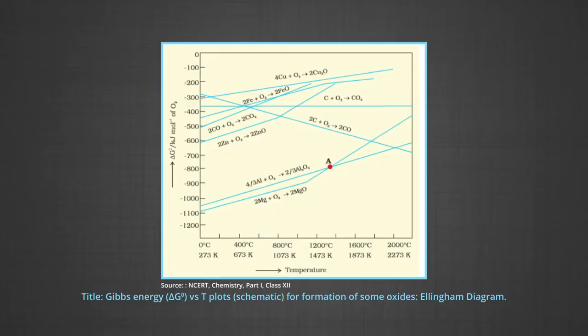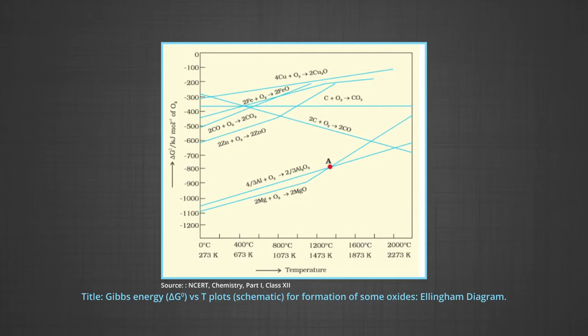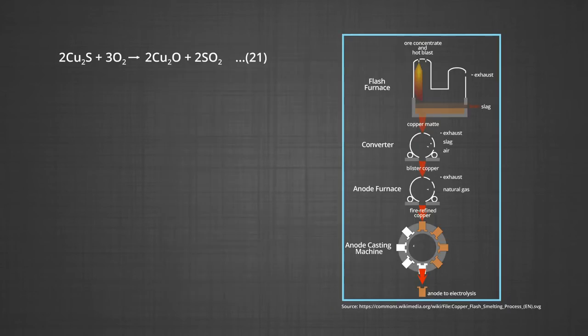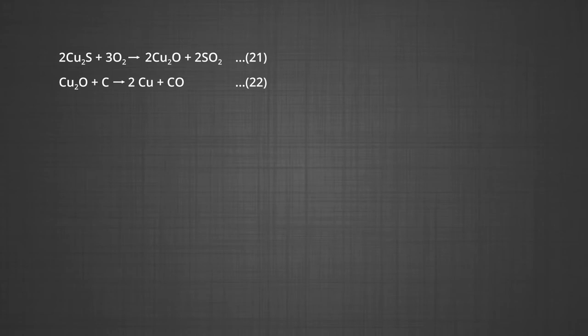Now let us understand the extraction of copper from cuprous oxide using the Ellingham diagrams. In the graph of ΔG° versus temperature for the formation of oxides, the cuprous oxide line is almost at the top, so it is quite easy to reduce oxide ore of copper directly to the metal by heating with coke. Both lines of coke — CO₂ and coke–CO₂ — are at much lower positions in the graph, particularly after 500–600 K. However, most of the ores are sulphide and some may also contain iron. The sulphide ores are roasted and smelted to give oxides: Cu₂S + O₂ → Cu₂O + SO₂. The oxide can then be easily reduced to metallic copper using coke: Cu₂O + C → Cu + CO. In actual process, the ore is heated in a reverberatory furnace after mixing with silica.